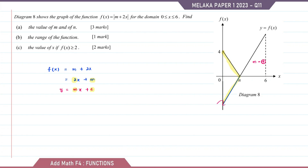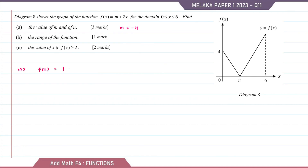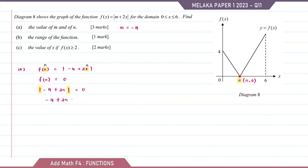Therefore the original y-intercept is negative 4, so the value of m is equal to negative 4. The function f(x) is equal to the modulus of negative 4 plus 2x. Next, n lies on the x-axis, so the coordinate of n is (n, 0), meaning f(n) equals 0. Substituting: modulus of negative 4 plus 2n equals 0. Removing the modulus signs, negative 4 plus 2n equals 0, so 2n equals 4, giving n equals 2.